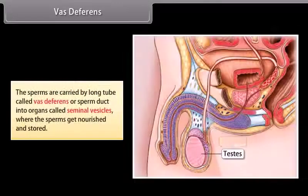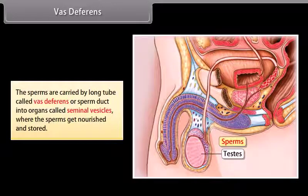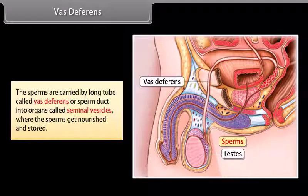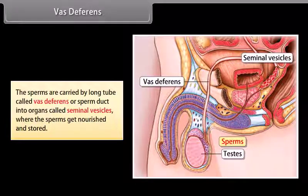The sperms are carried by a long tube called the vas deferens, or sperm duct, into organs called seminal vesicles, where the sperms get nourished and stored.